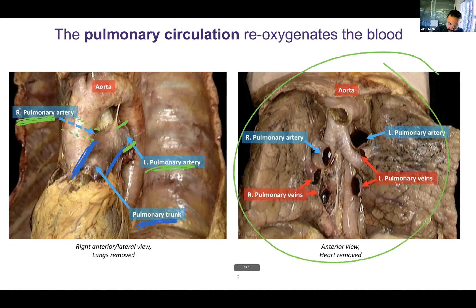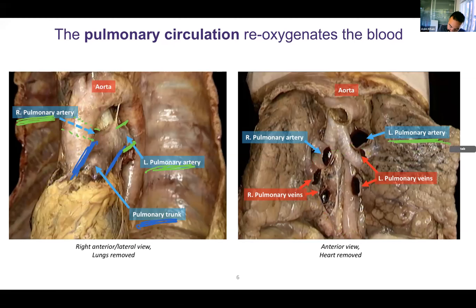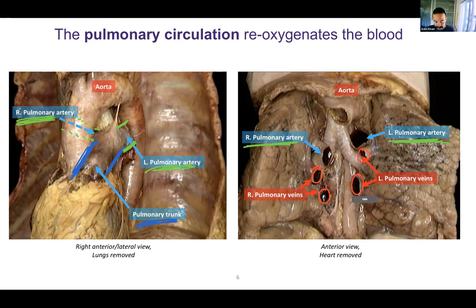On the right side of the image, the heart has been removed so we can better see all the other connections — the heart should be right here, but it's gone. We can see the pulmonary arteries on the left and right side. You can also see two pulmonary veins on either side — right pulmonary veins and left pulmonary veins. And you can see the aorta that's been cut here; it should be coming down to the heart, but that's gone.